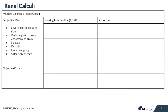The subjective data for renal calculi are first and foremost severe pain of the back and side — you may hear this called flank pain. Patients may also complain of pain that radiates from the lower abdomen into the groin. Nausea is common, as well as pain with urination, urinary frequency, and urinary urgency.